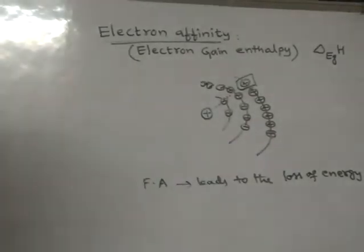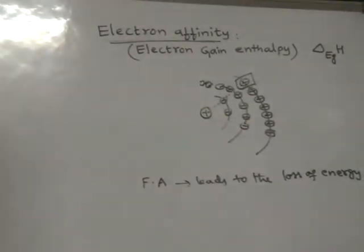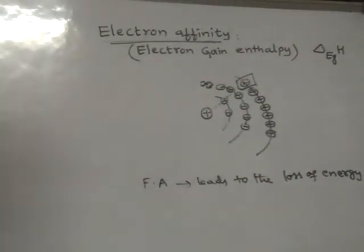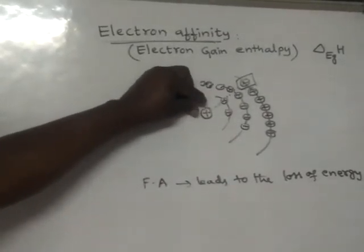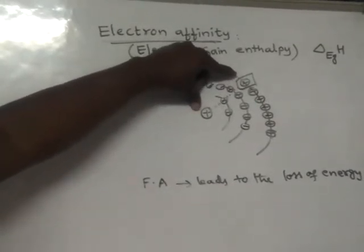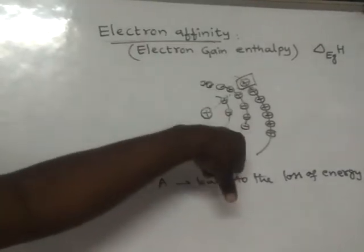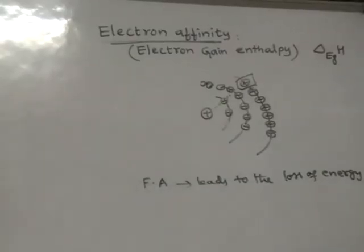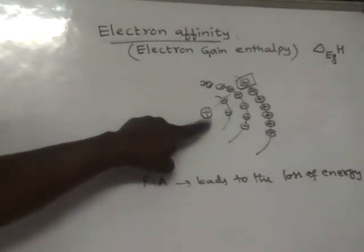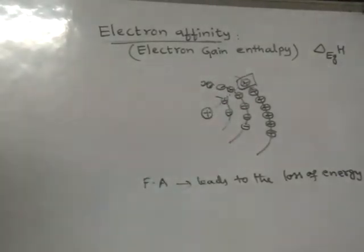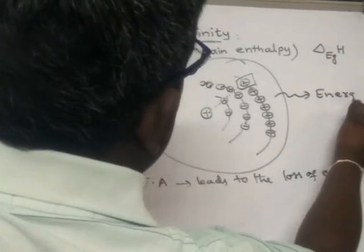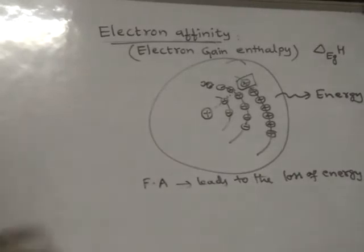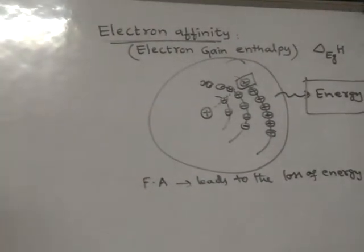If the nucleus is showing force of attraction on that electron, remember that force of attraction always leads to loss of energy. When an electron is added to an atom from the outside — from some other atom or elsewhere — if the nucleus of that atom can show force of attraction on the electron, then that electron will remain in the atom only. In that case, there should be a release of energy — this atom should lose some energy.